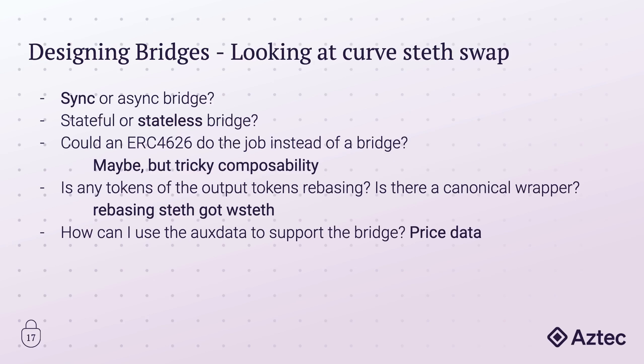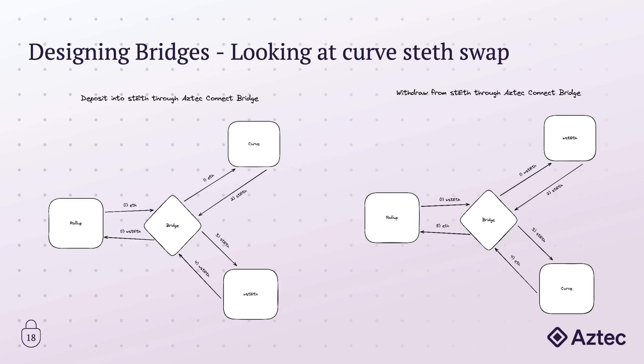Looking at the Curve staked ETH swap: it's a synchronous bridge since it's just doing a swap — it doesn't need to hold any state, so it's stateless. Could we do it with ERC-4626? Probably, but it would be a bit annoying and not as composable as just using wrapped staked ETH instead. Staked ETH is rebasing, so we use wrapped staked ETH. And we can use aux data for price data related to this bridge. With this in mind, we can draw out the flow — from the rollup to the bridge, the bridge swaps ETH on Curve, staked ETH is wrapped and returned to the rollup, and reverse order for withdrawal.